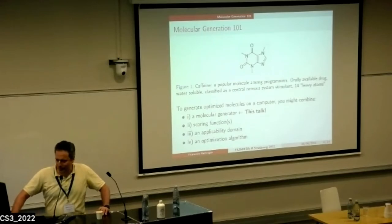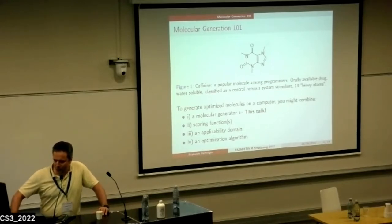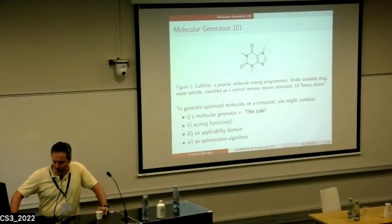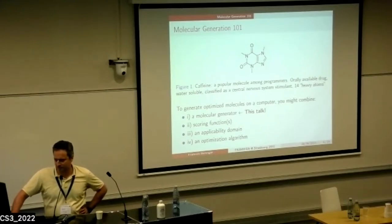About molecular generation: here we have a caffeine molecule. If you want to generate optimized molecules on a computer, you might combine four things: a molecular generator, which is the goal of this talk; at least one scoring function; an applicability domain for that scoring function; and of course an optimization algorithm.